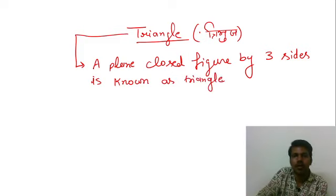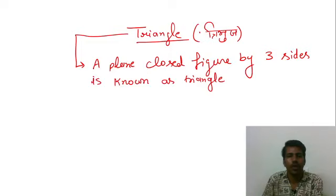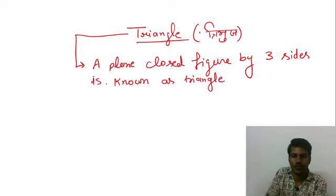This means, तीन भुजाओं से घिरी आकृति को हम क्या कहते हैं, त्रिभुज कहते हैं, right?